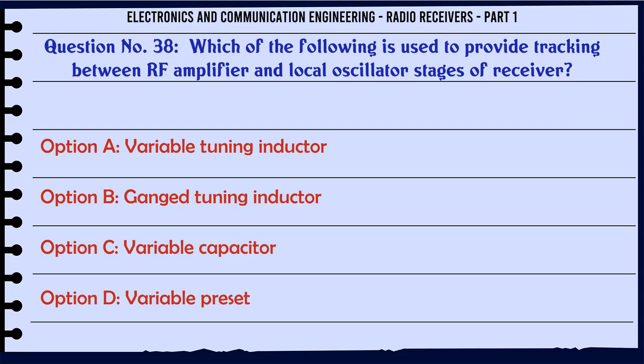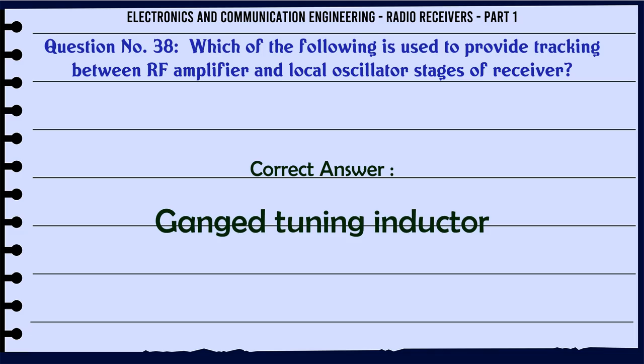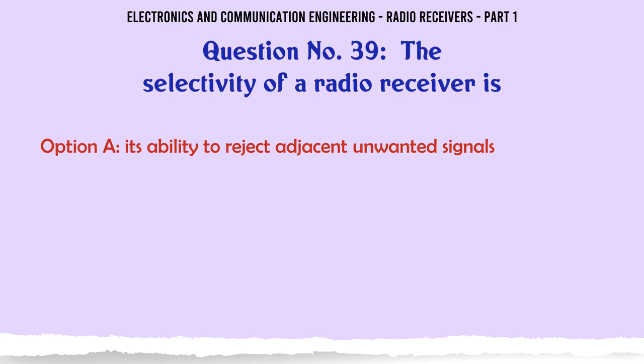Which of the following is used to provide tracking between RF amplifier and local oscillator stages of a receiver? A. Variable tuning inductor. B. Ganged tuning inductor. C. Variable capacitor. D. Variable preset. The correct answer is ganged tuning inductor.